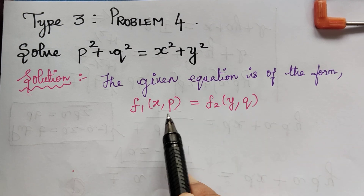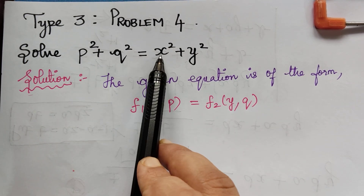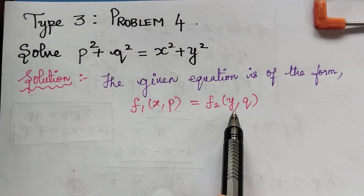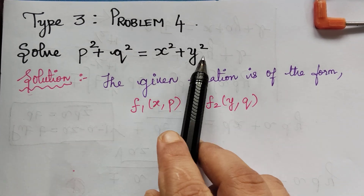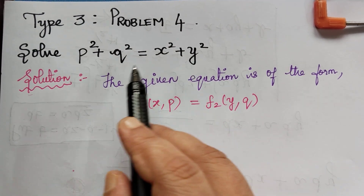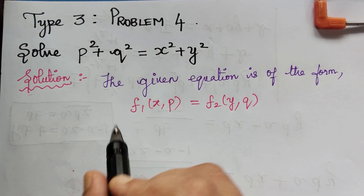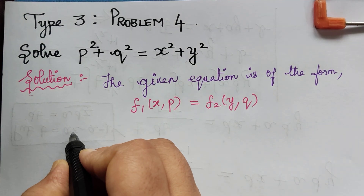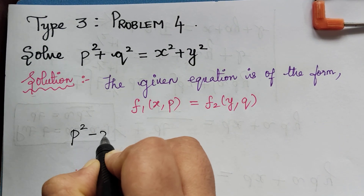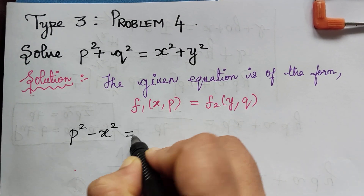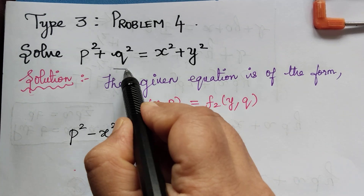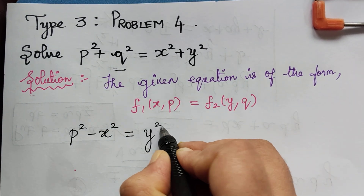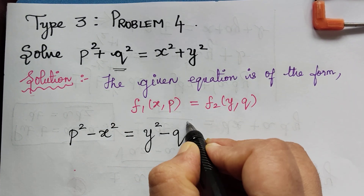Whenever it is of this form, we have to gather all the x and p terms on the left and y and q terms on the right of this equation. When we do so, taking x² to the left, we get p² − x² = y² − q².